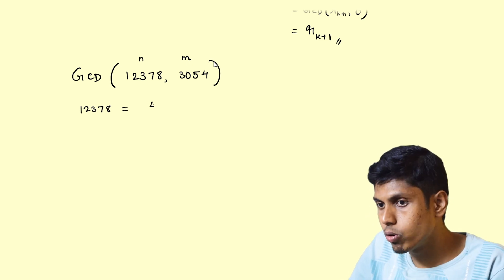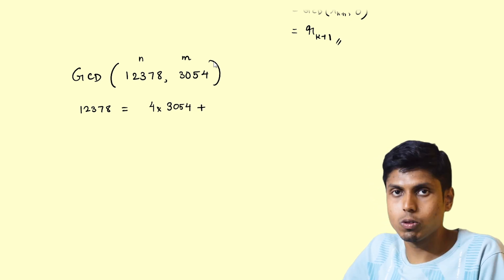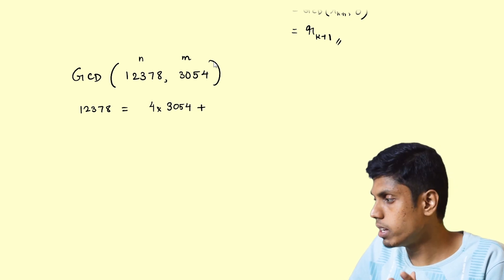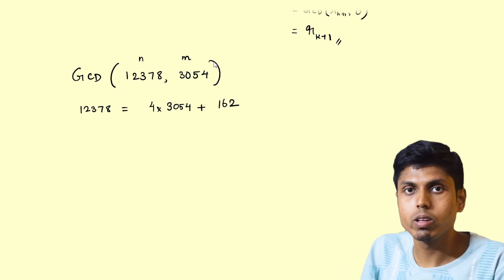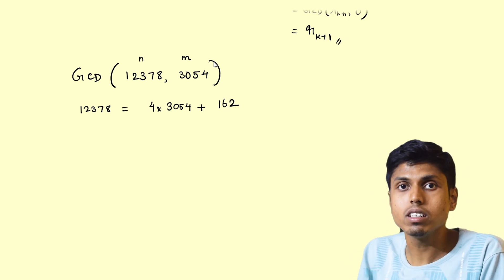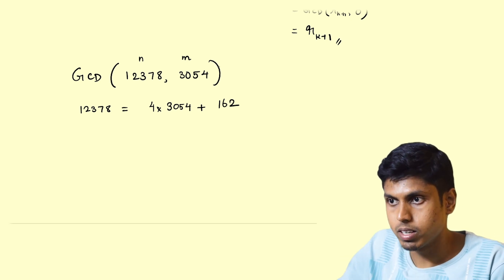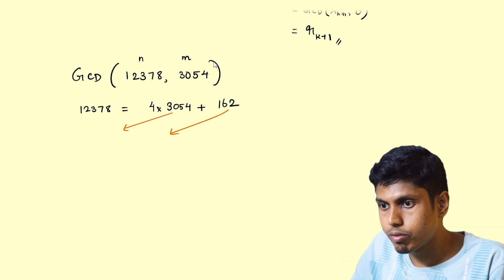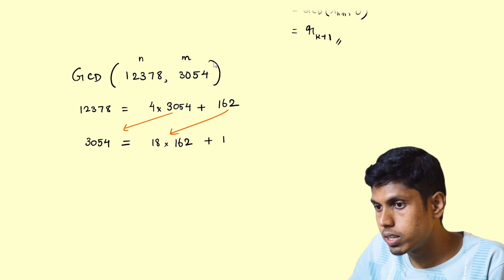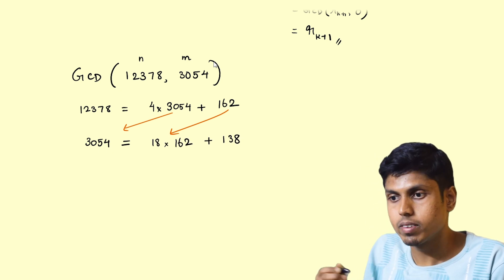So 12378 when divided by 3054, the quotient would be 4. So it is 4 times 3054, and if you calculate, the remainder would be 162. And now for the next step of the algorithm, we take the divisor and the remainder and perform the division algorithm.